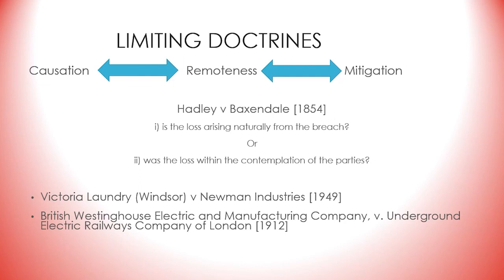The final limiting doctrine is mitigation. The victim of a breach is under an obligation to mitigate his losses; if he fails to do so then the damages award will be reduced accordingly. This means simply that the breach does not give the victim a licence to spend. The claimant needs to take reasonable steps to minimize his loss, but these steps need only be reasonable — the claimant is not expected to go out of his way to make it easier for the perpetrator of the breach. An example of the rule in operation is the case of British Westinghouse v Underground Electric Railways from 1912.